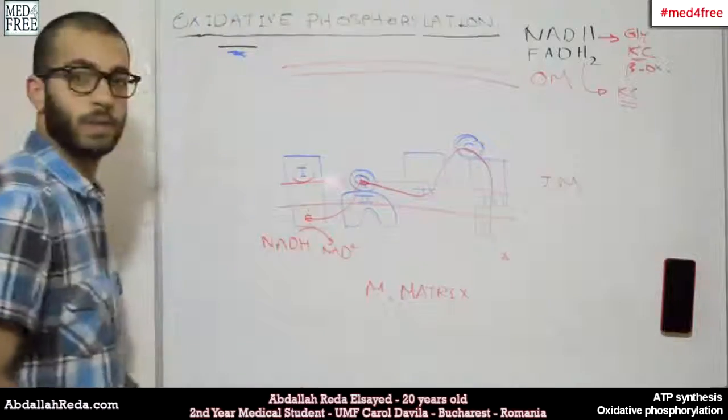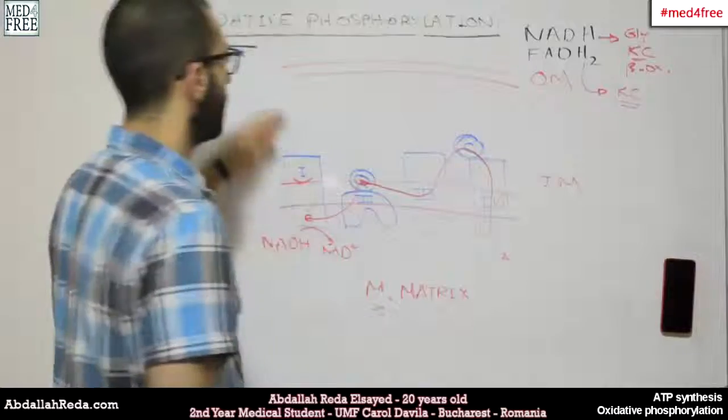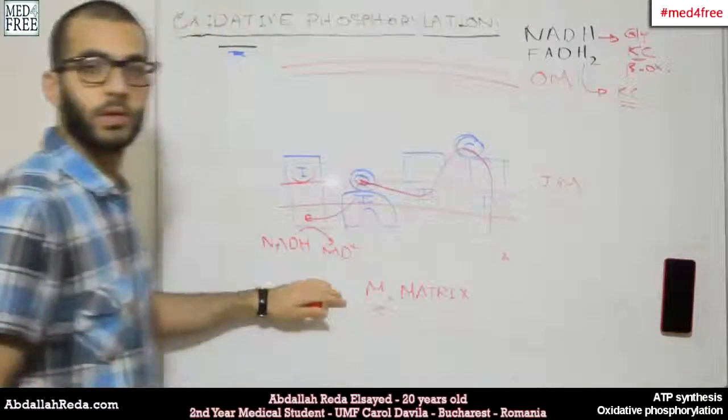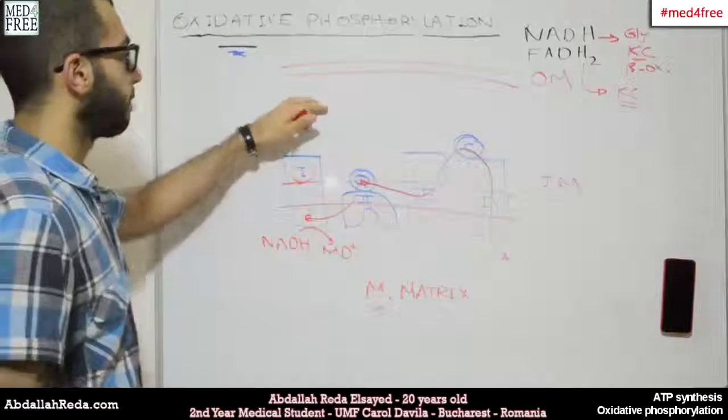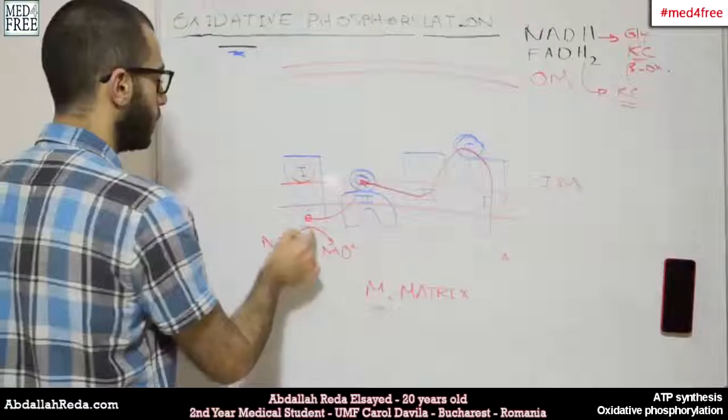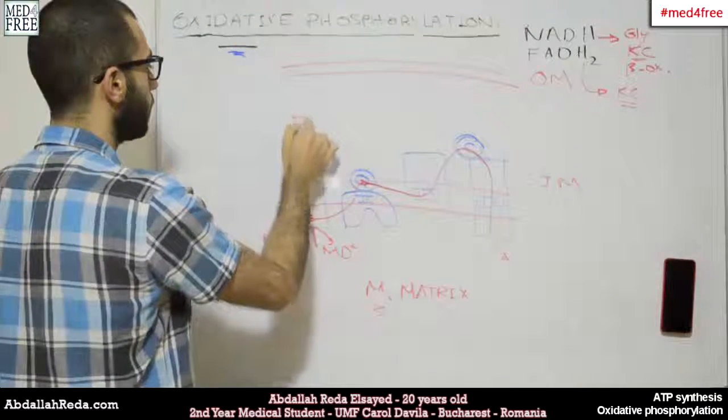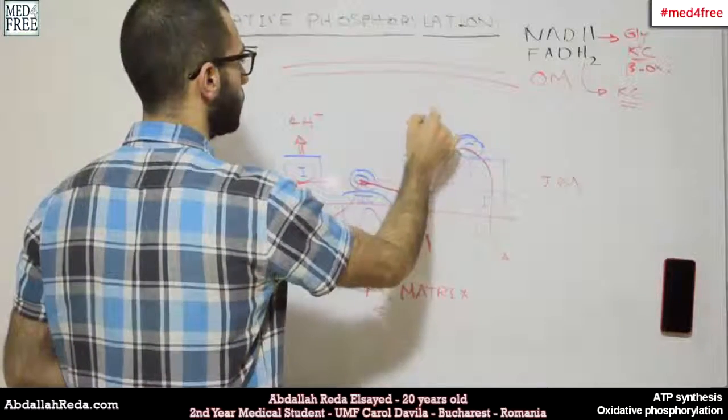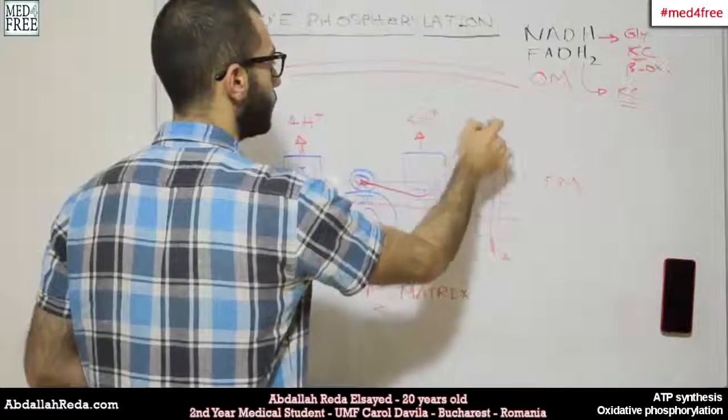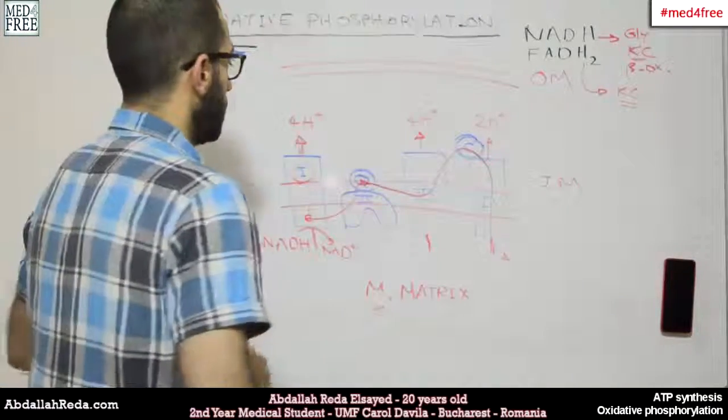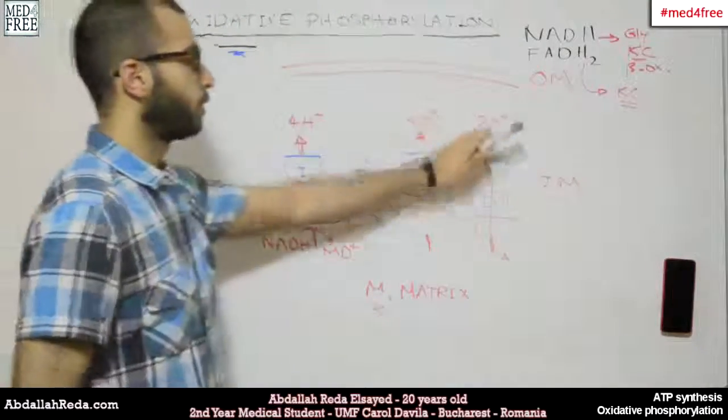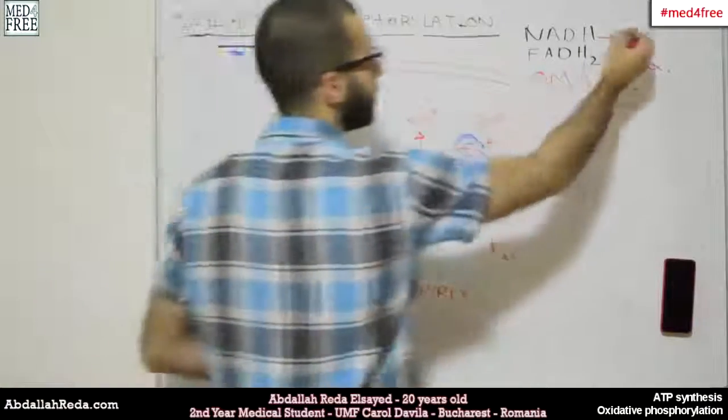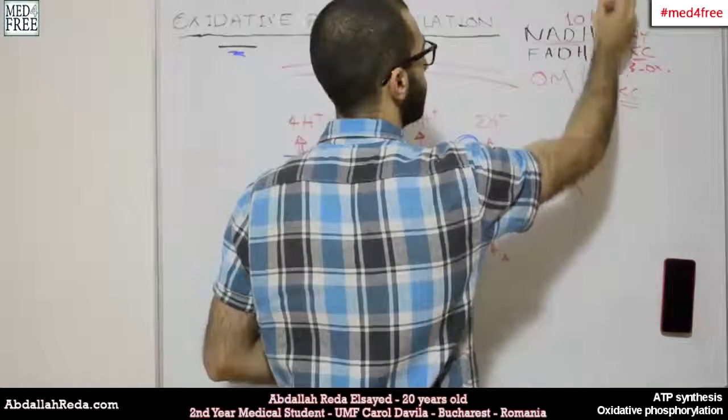Let's bear in mind that we have protons in the mitochondrial matrix and in the intermembranous space. The protons will be pumped from the mitochondrial matrix into the intermembranous space. Complex 1 will pump 4 protons or 4 hydrogen atoms. Complex 3 will pump another 4. And finally, complex 4 will pump 2 protons. NADH will induce 10 protons to be pumped from the mitochondrial matrix into the intermembranous space.